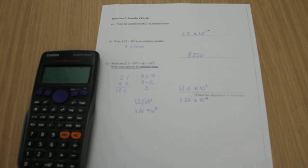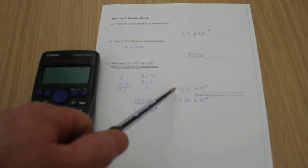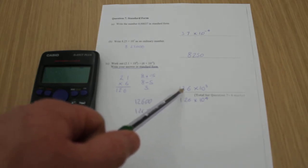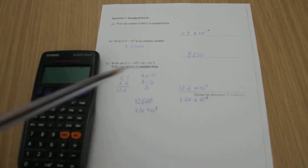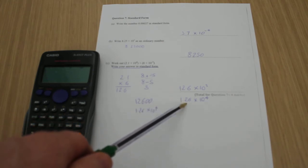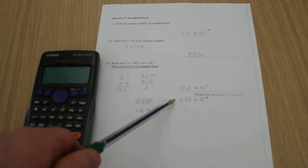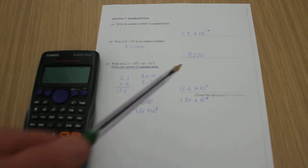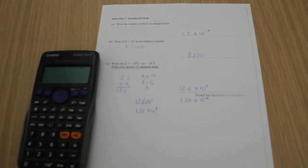Now, what I'm going to do is turn that back into standard form again, because we know that the number at the start of standard form has to be between 1 and 9.9 recurring. So I turned 12.6 into 1.26, therefore making it 10 times smaller. So to accommodate that, I increased the power by 1, therefore making it 10 times bigger.